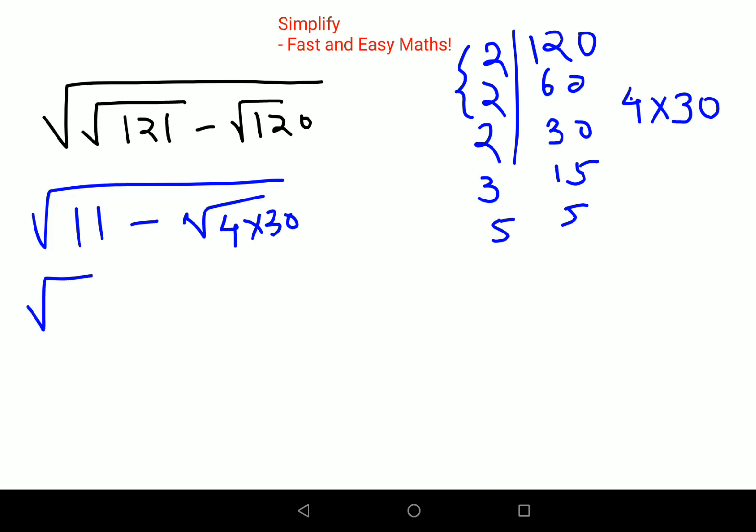Now this can be written as 11 minus 2√30, because I can take 2 outside since √4 = 2.